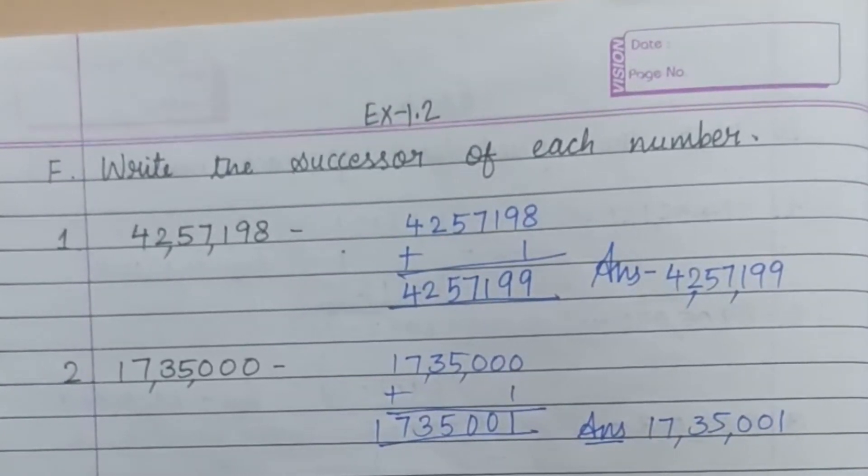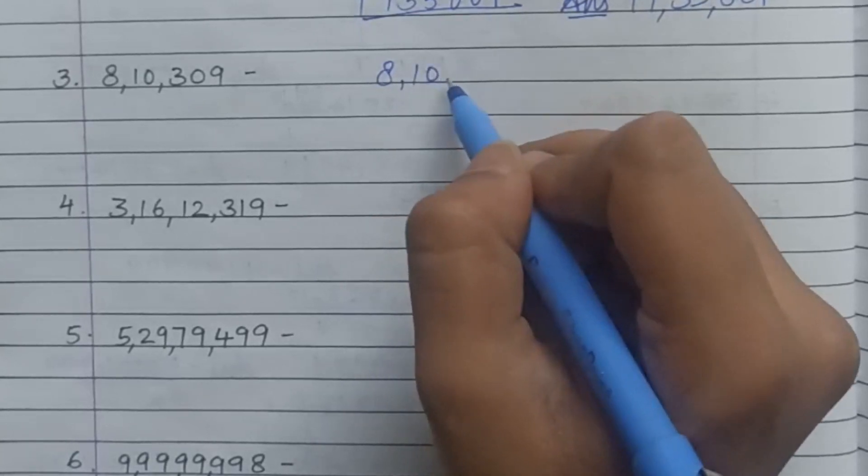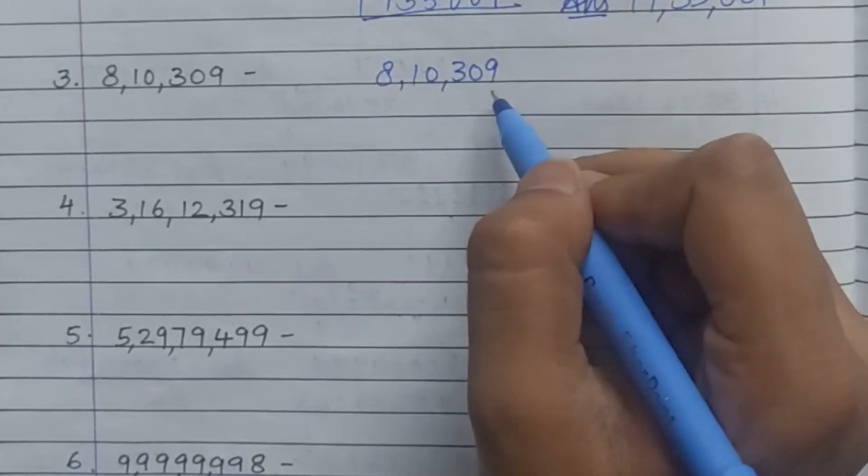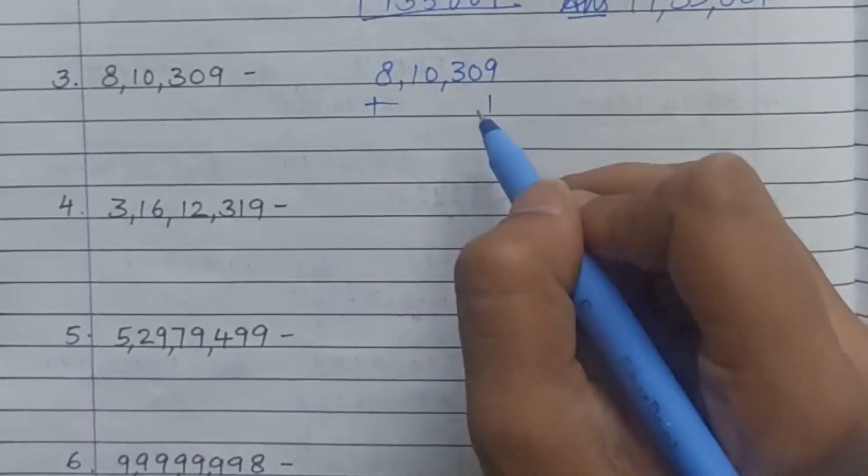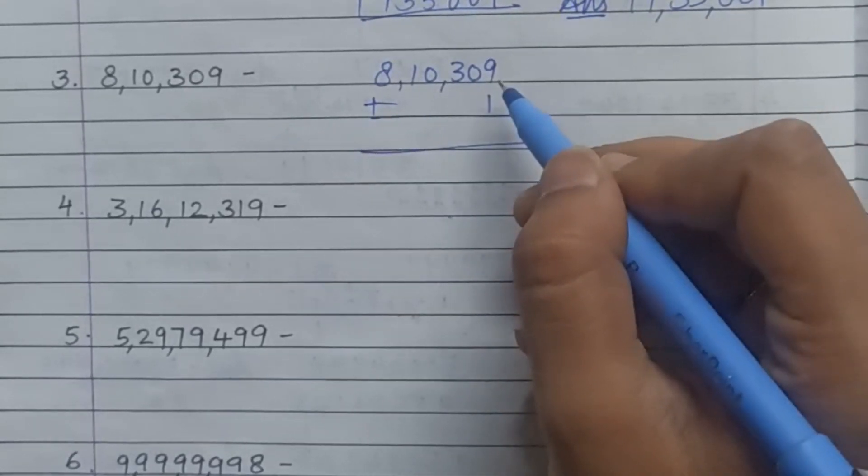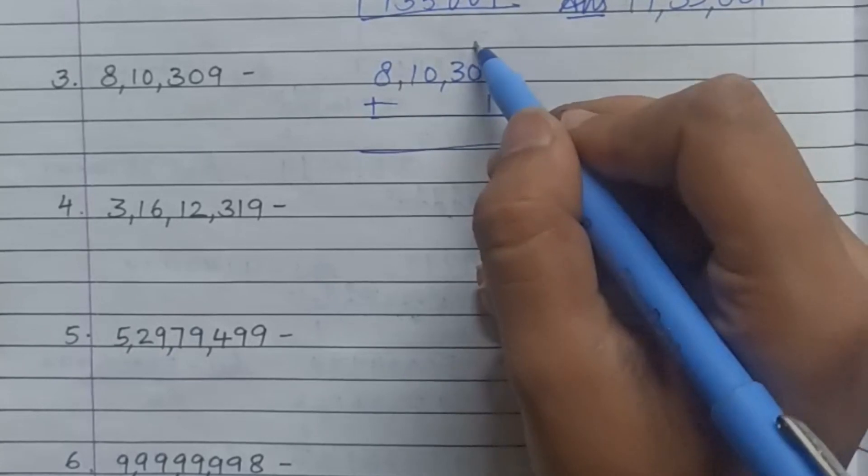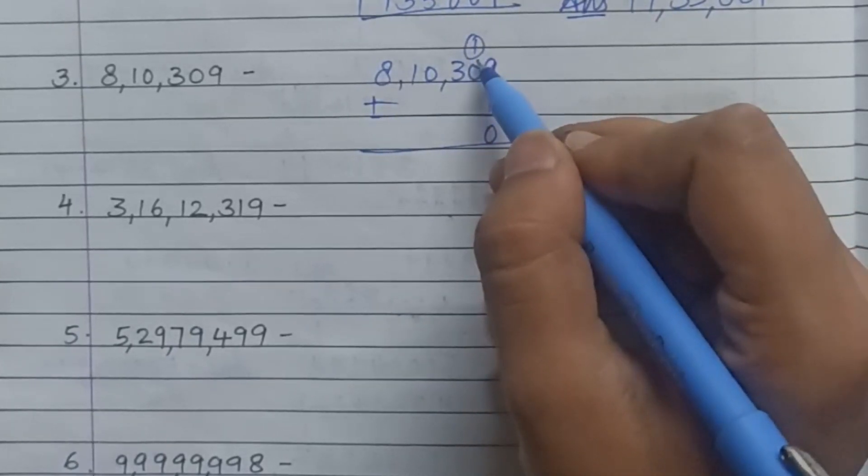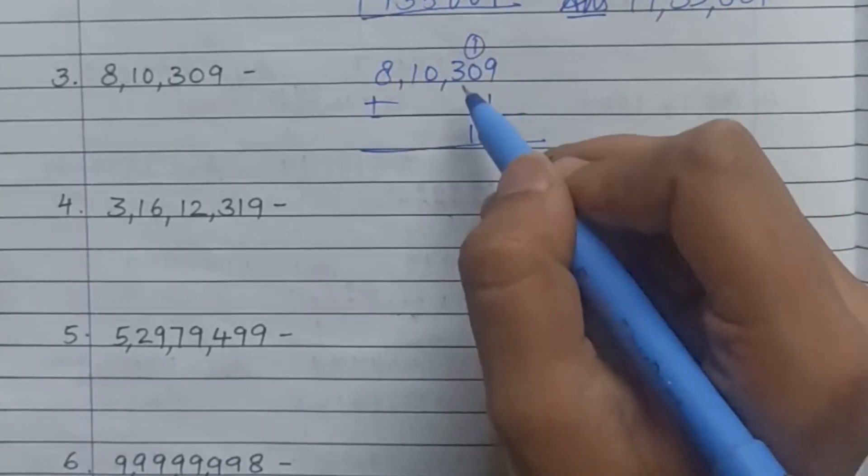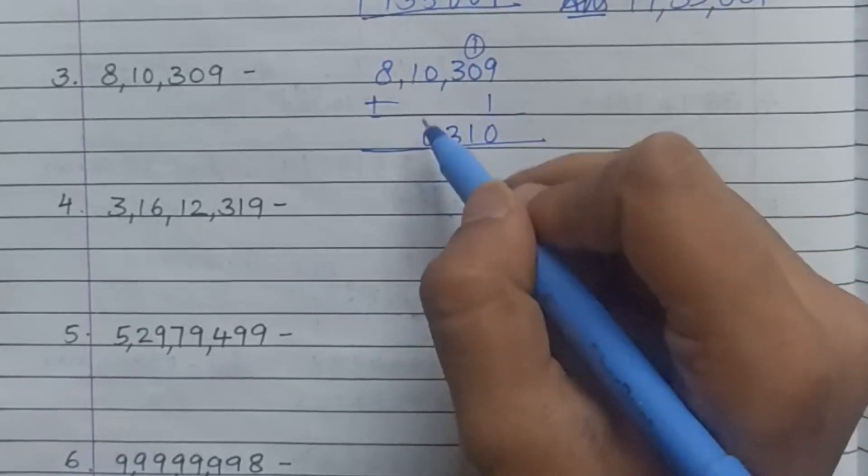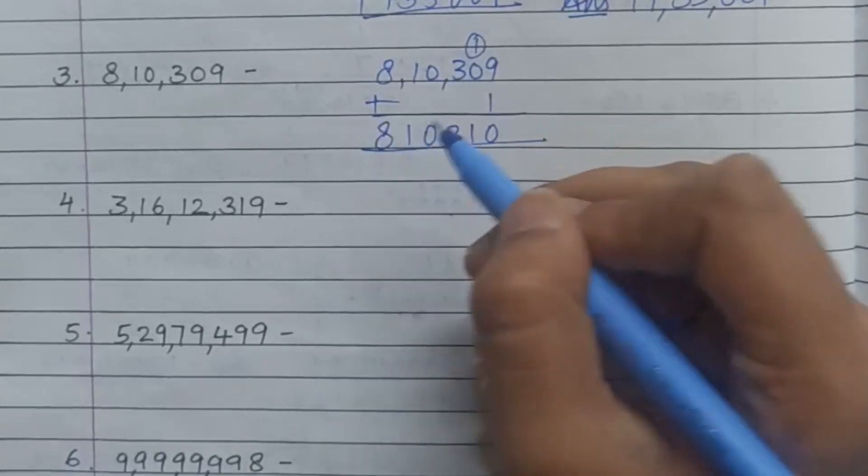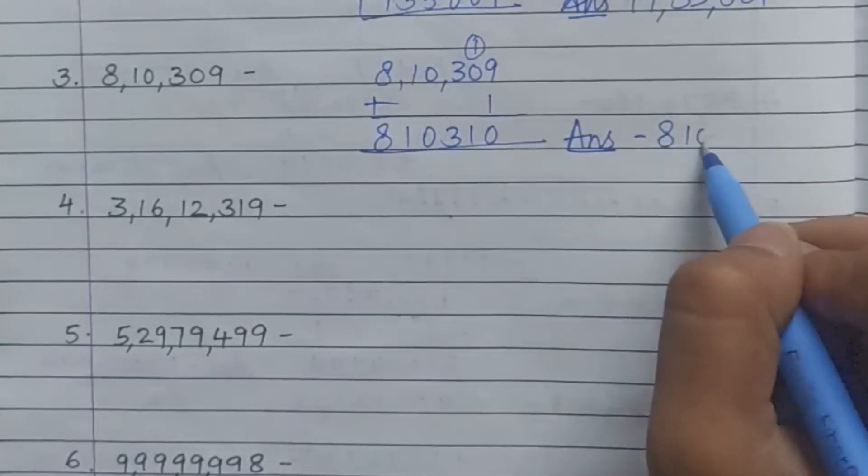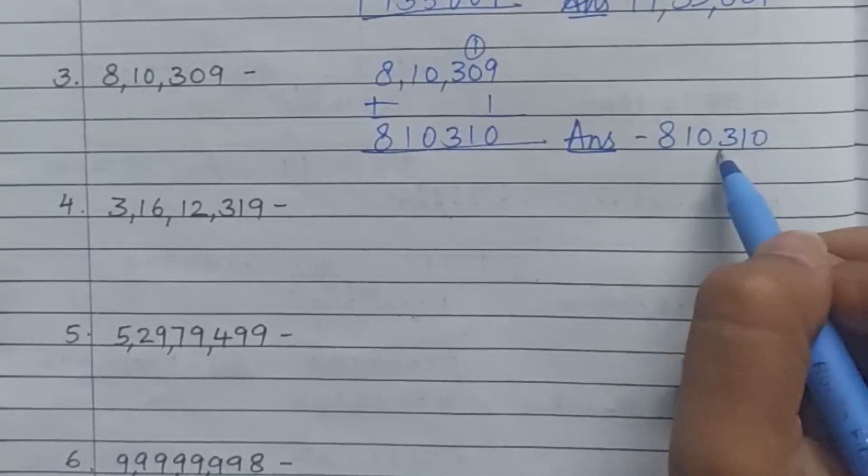Next question: 8,10,309. Add 1 to this number. 9 plus 1 is 10, so you carry 1. 1 plus 0 is 1, then 3, 0, 1, 8. The answer is 8,10,310.